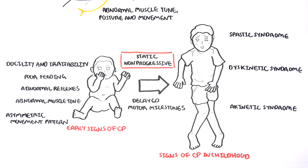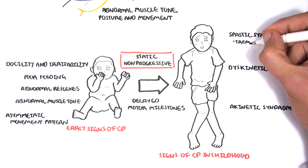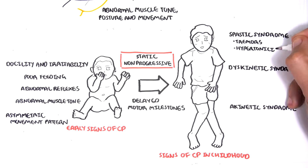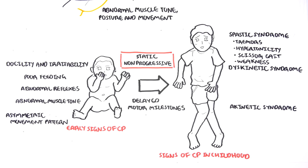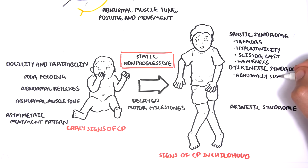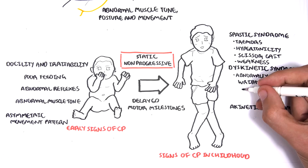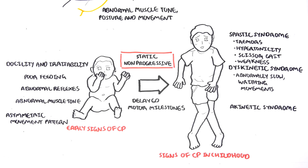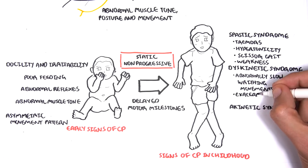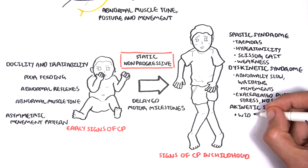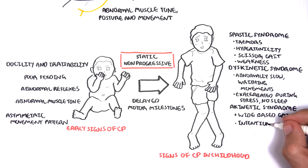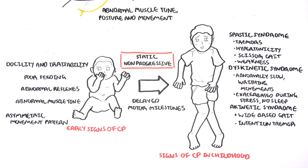For spastic syndrome, signs and symptoms include tremors, hypertonicity, scissor gait and limb weakness. The dyskinetic syndrome includes abnormally slow movement and writhing movement, which is exacerbated during stress or lack of sleep. The ataxic syndrome involves the cerebellum, and problems here cause a wide-based gait and intentional tremor.